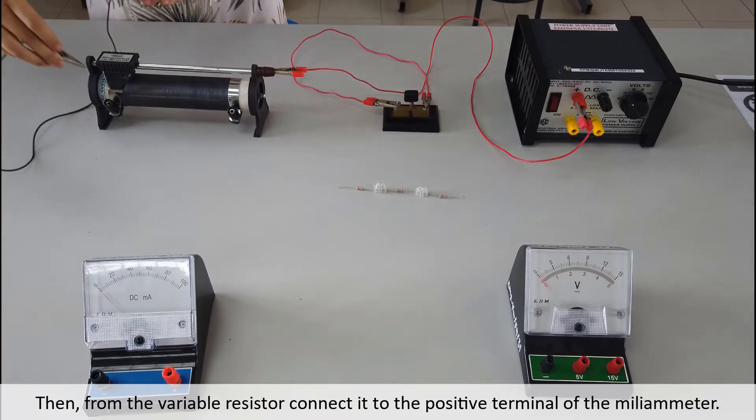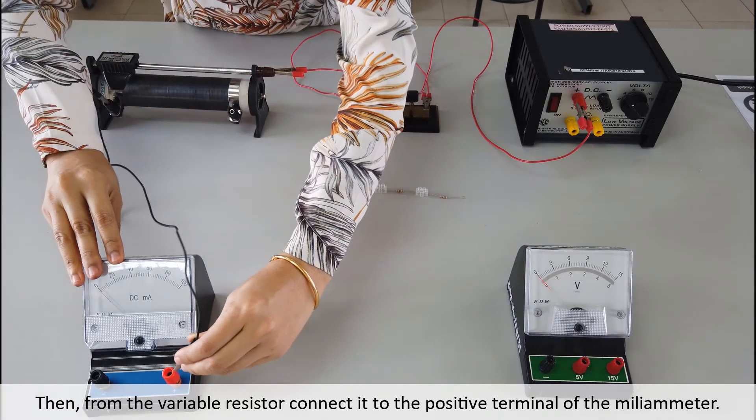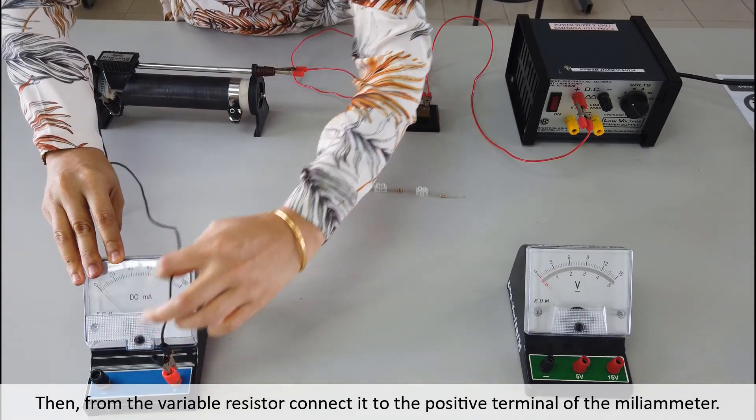Then, from the variable resistor, connect it to the positive terminal of the milliammeter.